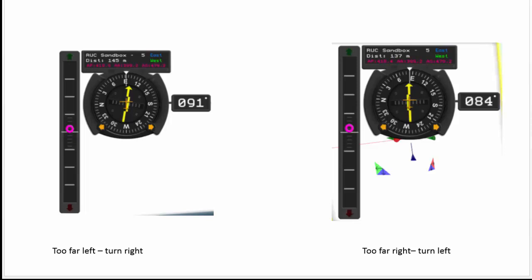So that's an overview of the horizontal situation indicator. I'll show you actually how to do a proper landing with it in the next video.